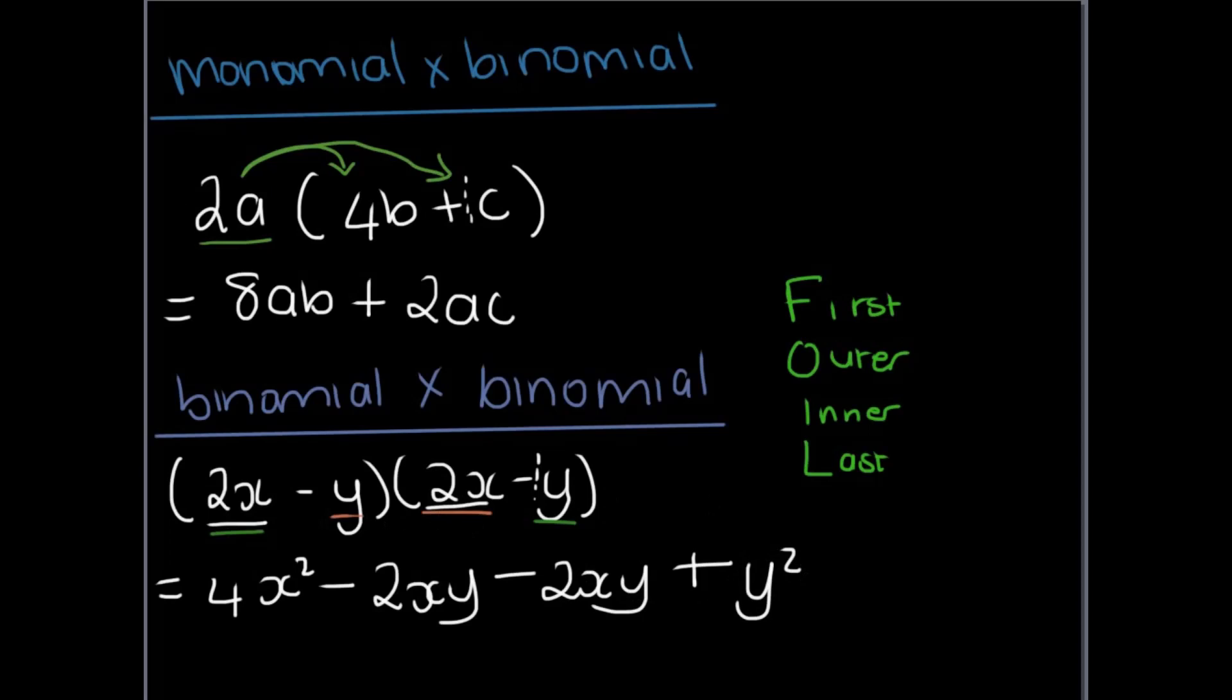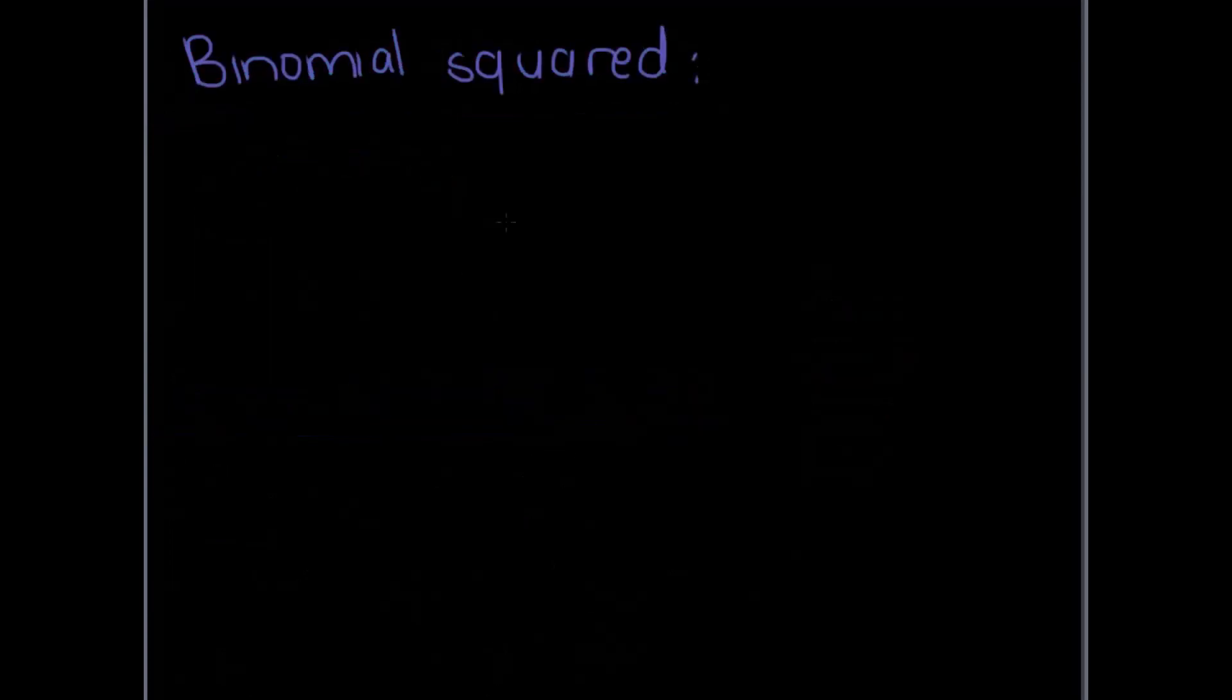So now we look for like terms. Our like terms here are xy and xy. So our 4x squared remains the same. We say negative 2 minus 2 which is minus 4 and xy is the like term and then y squared.